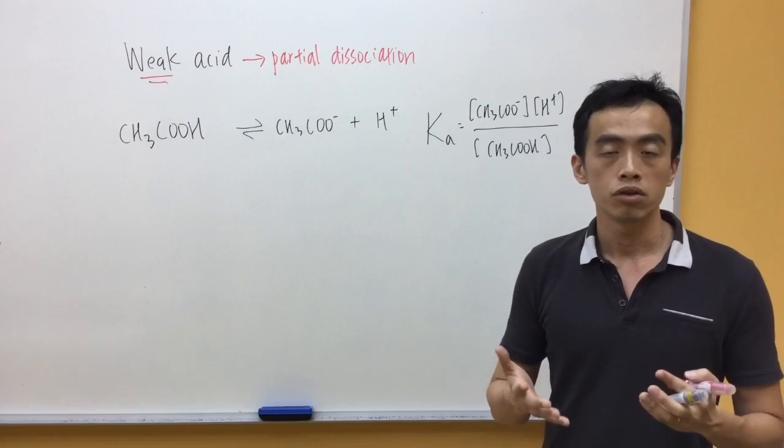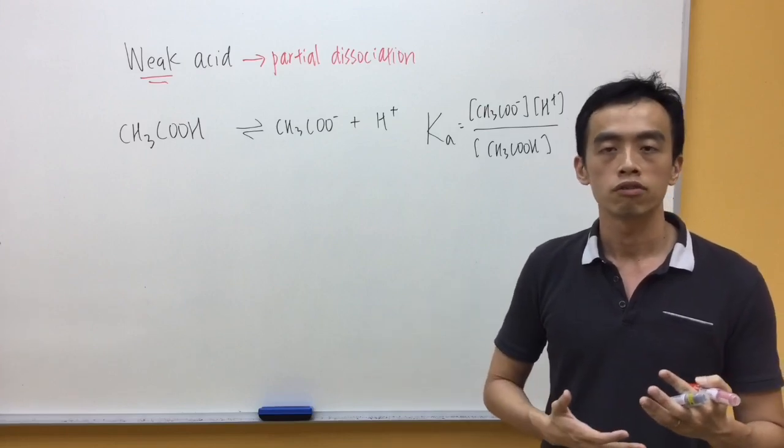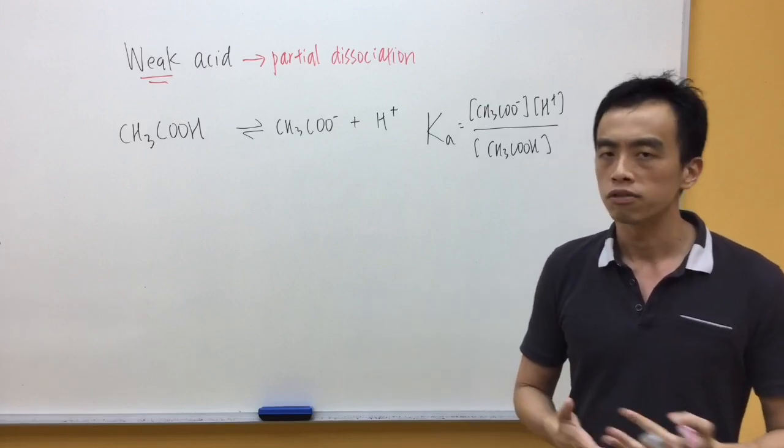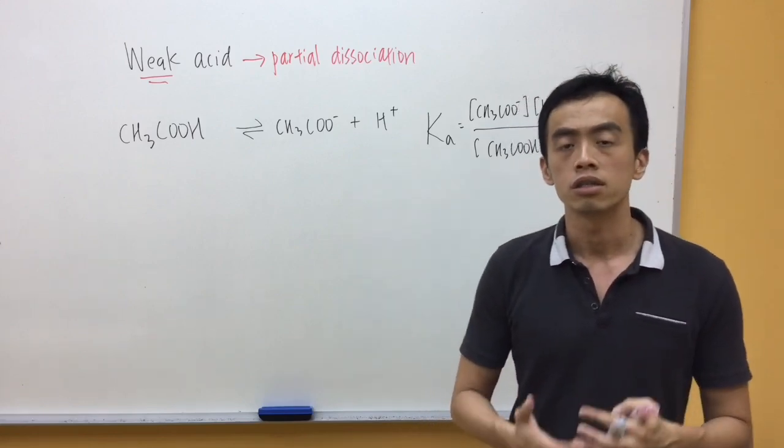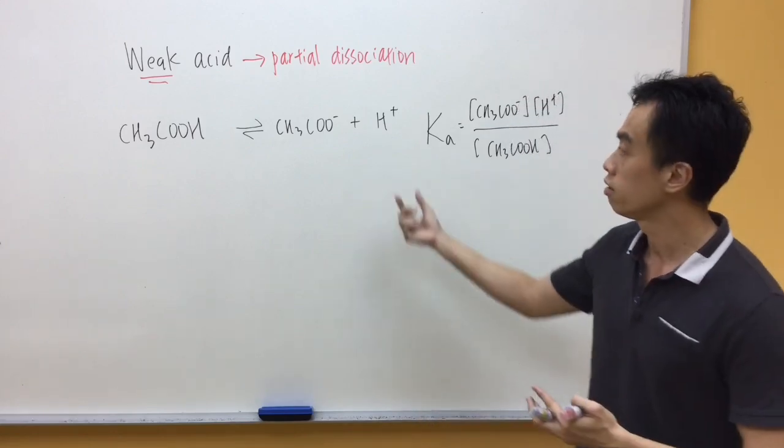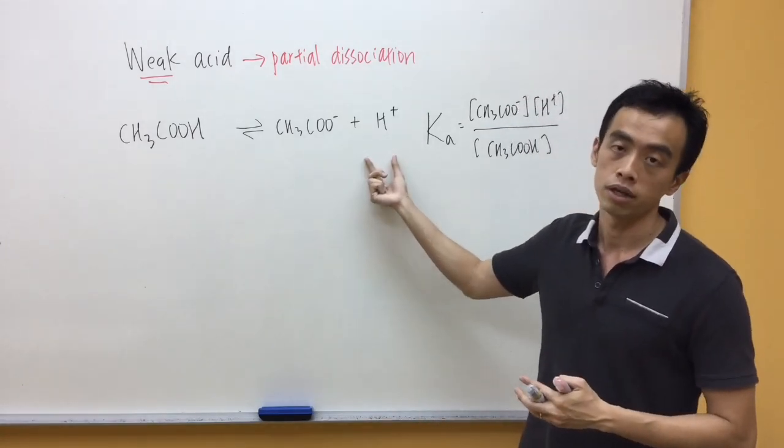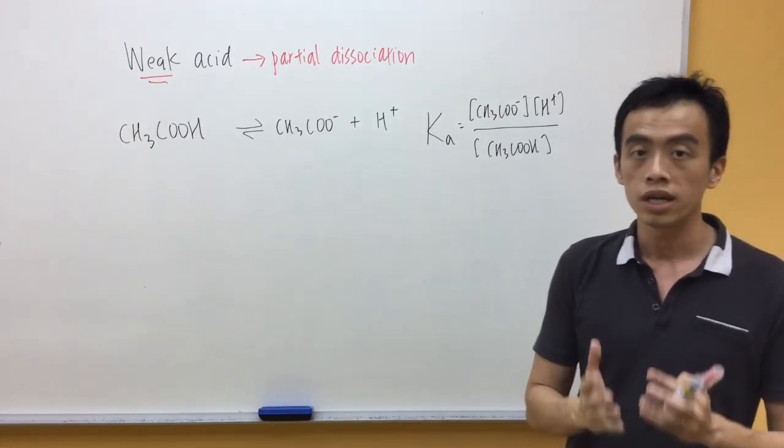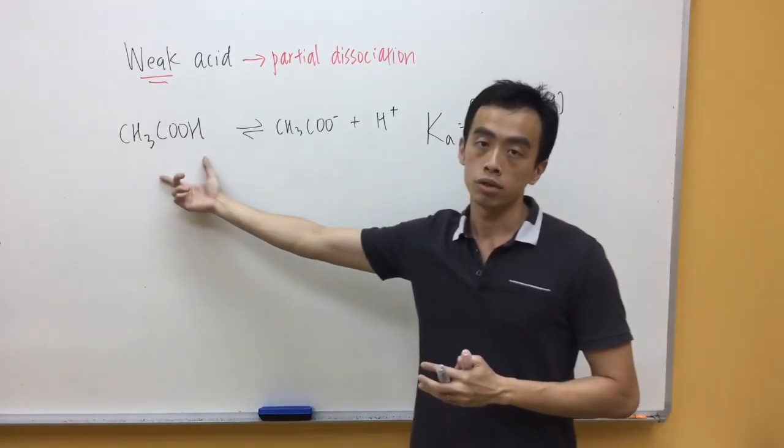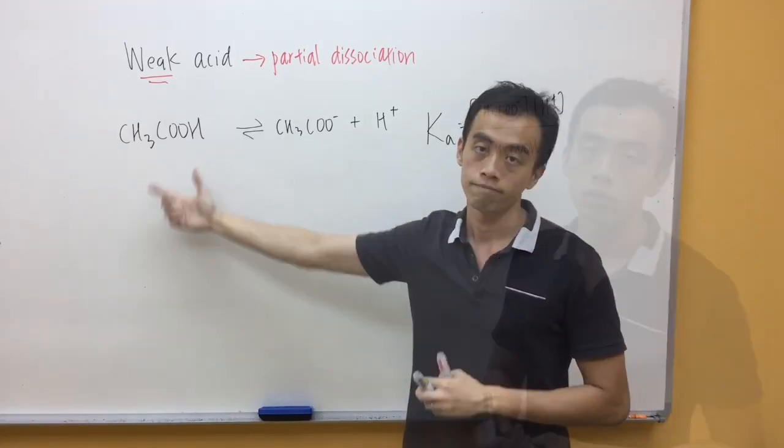Now, usually, Ka value is small, around the region of 10 to the power of minus 3, 10 to the power of minus 4, 10 to the power of minus 5. So, what this means is, in solution, actually, a very small amount of H+ is released. Most of it exists as undissociated CH3COOH.